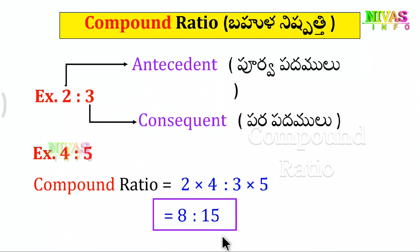We will try to simplify it. We have 8 is to 15. These two numbers are not reducible — they share no common factor. So this is the compound ratio: 8 is to 15.